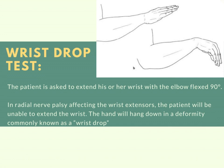For the wrist drop test, the patient is asked to extend the wrist with the elbow flexed 90 degrees, as seen in part A. In radial nerve palsy affecting the wrist extensors, the patient will be unable to extend the wrist. The hand will hang down in a deformity commonly known as wrist drop, as shown in the picture referenced earlier in the assessment test for radial nerve palsy.